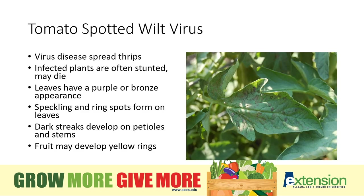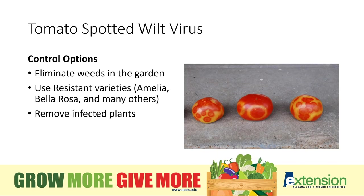Tomato spotted wilt is a major viral disease that attacks tomatoes, peppers, as well as some ornamental plants. This virus is spread by a tiny insect called a thrips. The insect acquires the virus by feeding on infected weeds or on the hosts, and then passes the virus to tomatoes and other plants when it feeds on them. Symptoms vary depending on when the plant is infected. Plants infected when they're small are often stunted and turn pale green — these stunted plants may actually wilt and die. Older plants may show leaves with a purple or bronze appearance, speckling, or purple ring spots. You may also see dark streaks on the petioles and stems, and fruit of infected plants will often have yellow rings.